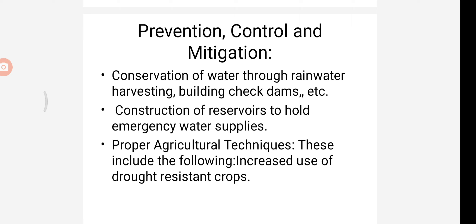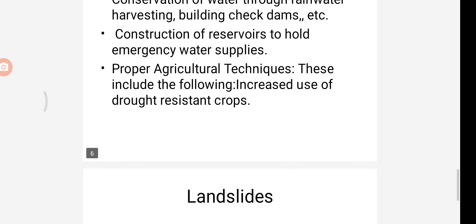For prevention and mitigation of drought: rains are caused by natural factors like air currents and wind direction, thus droughts are a natural phenomenon largely beyond human control. However, conservation of water through rainwater harvesting, check dams etc., construction of reservoirs to hold emergency water supplies, and application of proper agricultural techniques including increased use of drought-resistant crops are key measures.